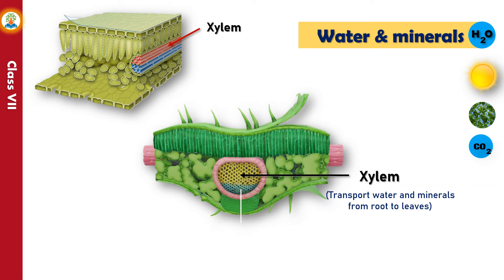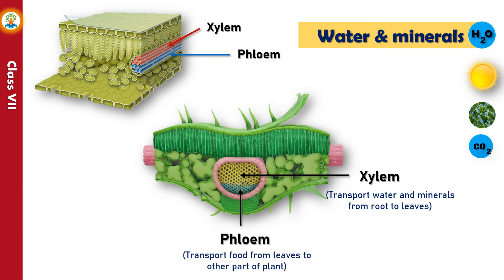Xylem is a tube-like structure that conveys water and dissolved minerals from the roots to the rest of the plant and also provides physical support. Phloem is the plant vascular tissue that conducts food made in the leaves during photosynthesis to all other parts of the plant.